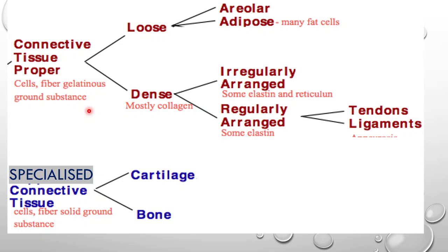Connective tissues are made up of cells as well as some proteins. The connective tissue is a type of tissue made up not just of individual cells but a collection of cells. Along with the cells, there are also fibrous proteins called collagen or elastin, which provide strength, elasticity, and flexibility to the tissues.